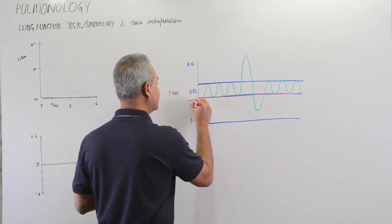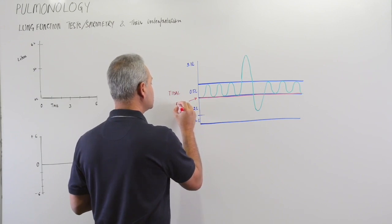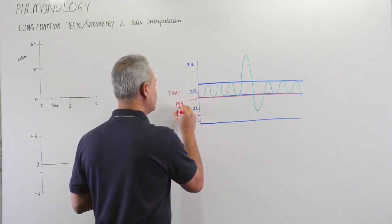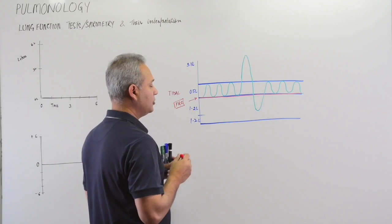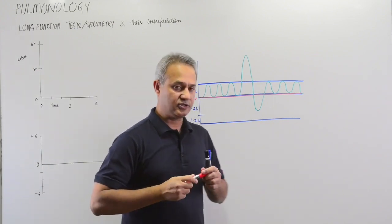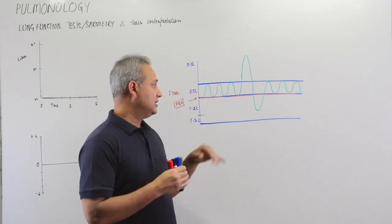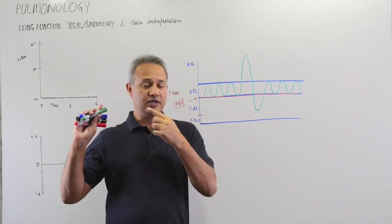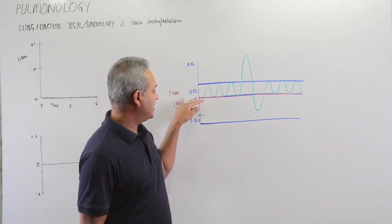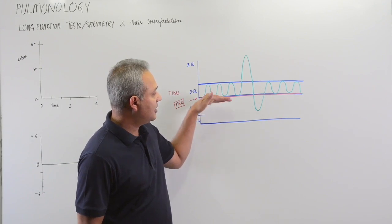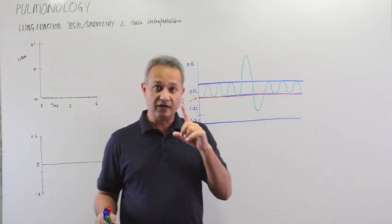We have done this in detail separately so I don't want to repeat it. The importance from the lung function tests is this: FRC tells us about a lung volume where the chest wall's outward movement and lungs' inward movement are balanced with each other.